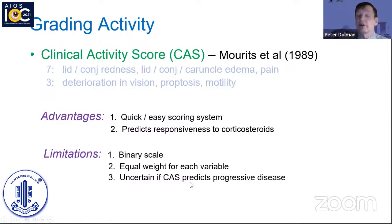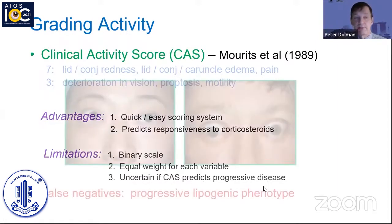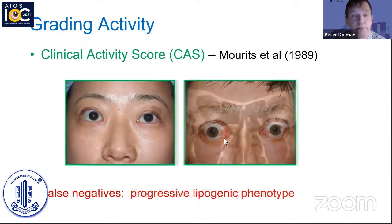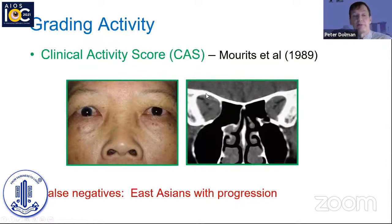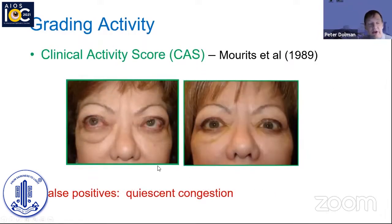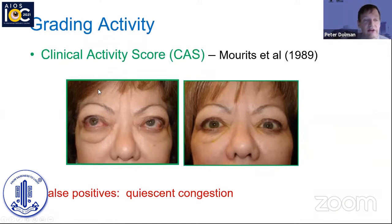The CAS is a quick, easy scoring system devised to predict responsiveness to corticosteroids and can be used as a surrogate marker for inflammatory activity. However, there are limitations: it's a binary scale, so measurable improvement in chemosis that doesn't fully resolve doesn't reflect in the score. Each variable carries equal weight — a drop of five lines in vision earns only the same single point as mild injection from dry eye. It's also uncertain whether the CAS actually predicts disease progression.